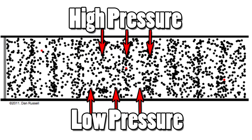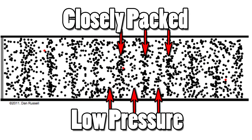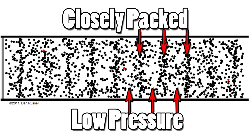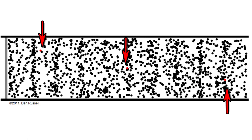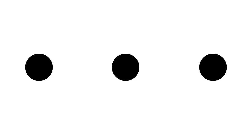There are places in the wave where molecules are closely packed and there are places in the wave where they're farther apart. And due to the interaction between these molecules, the wave of oscillating high and low pressure will propagate through space even though the actual molecules don't go very far.